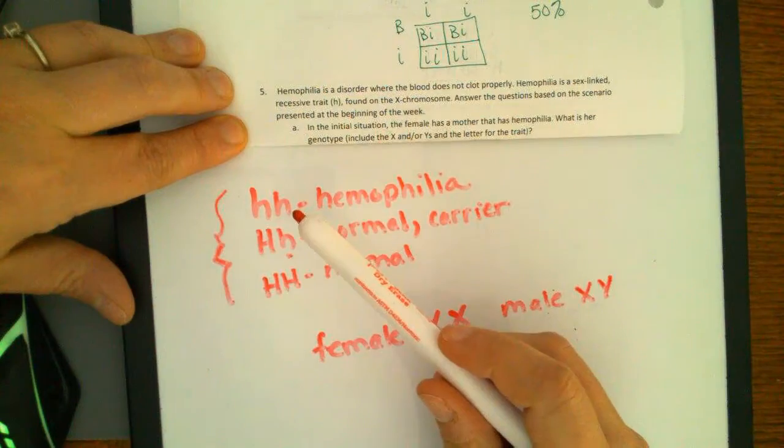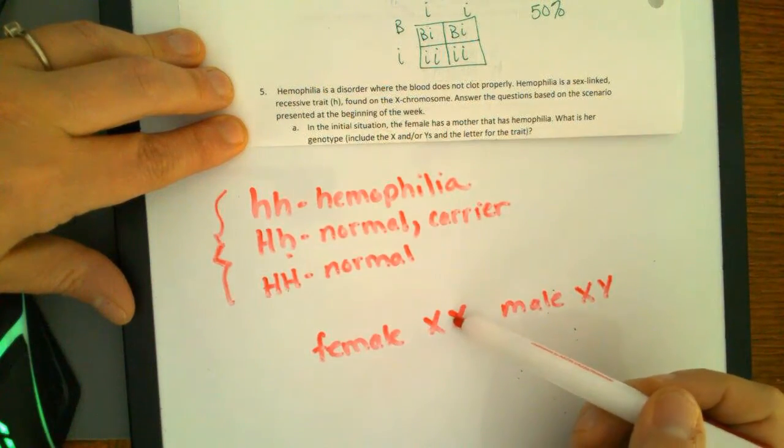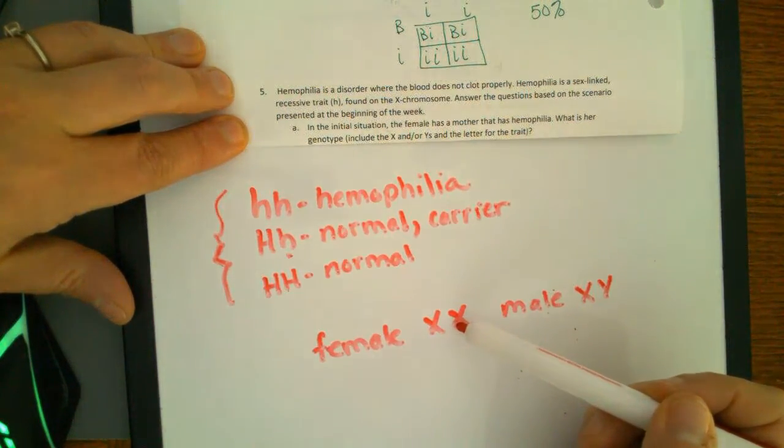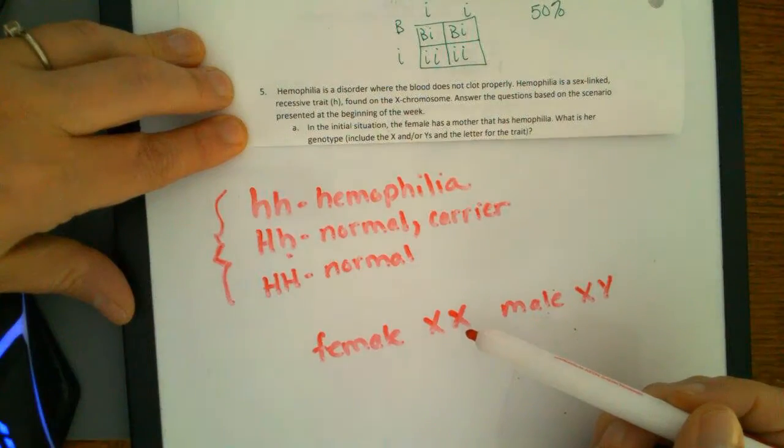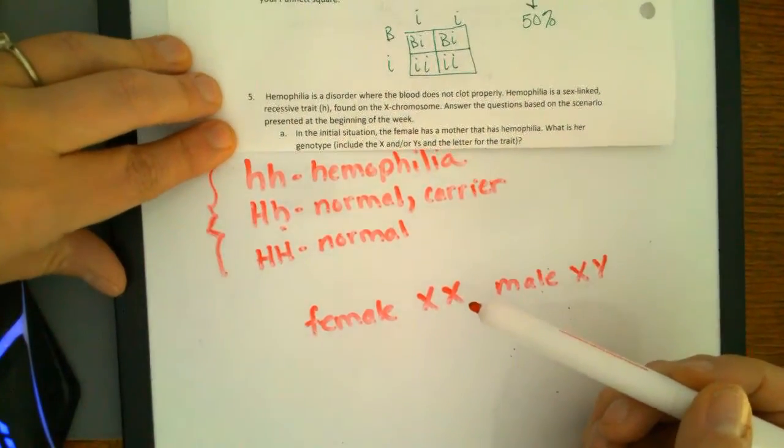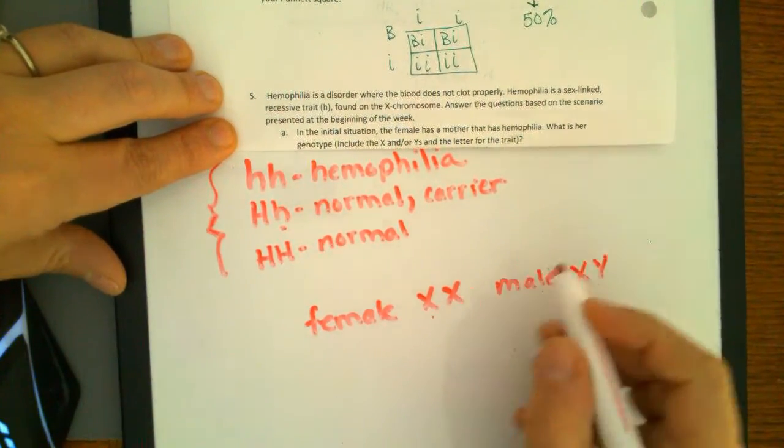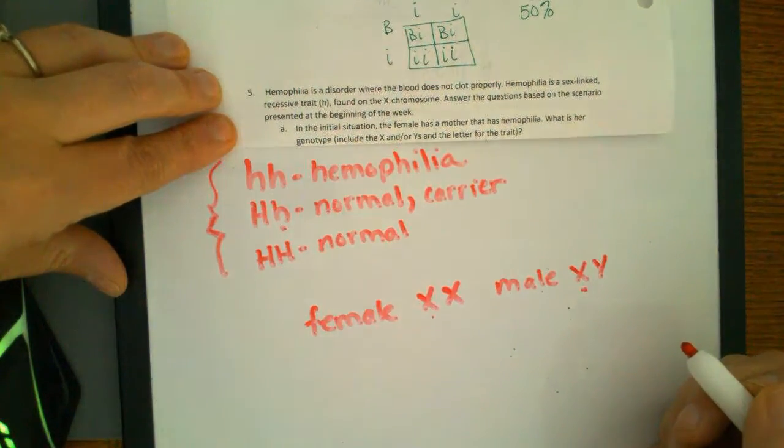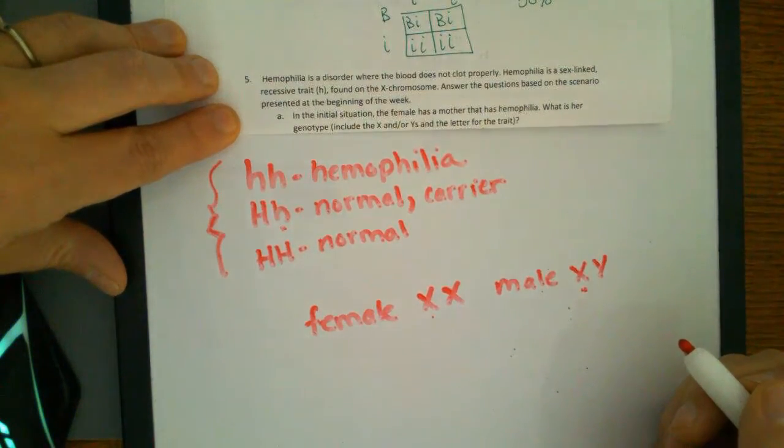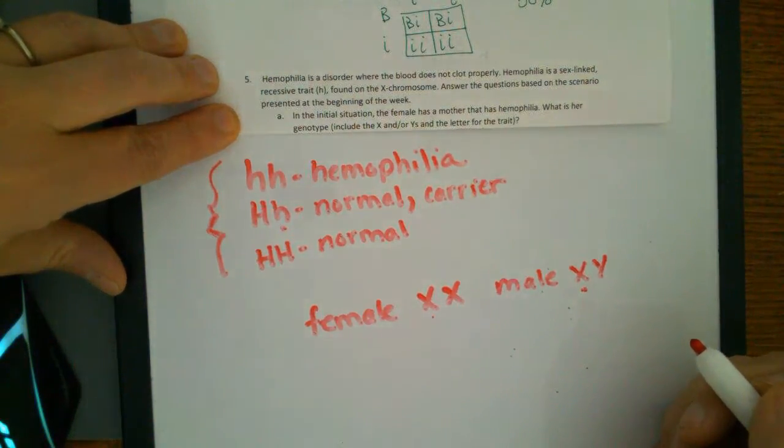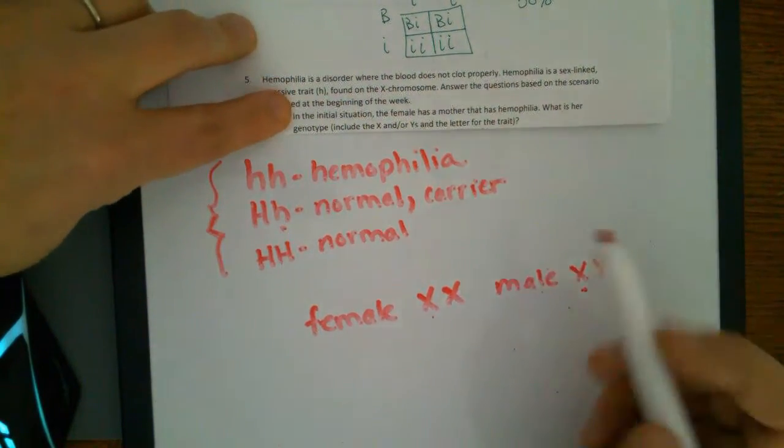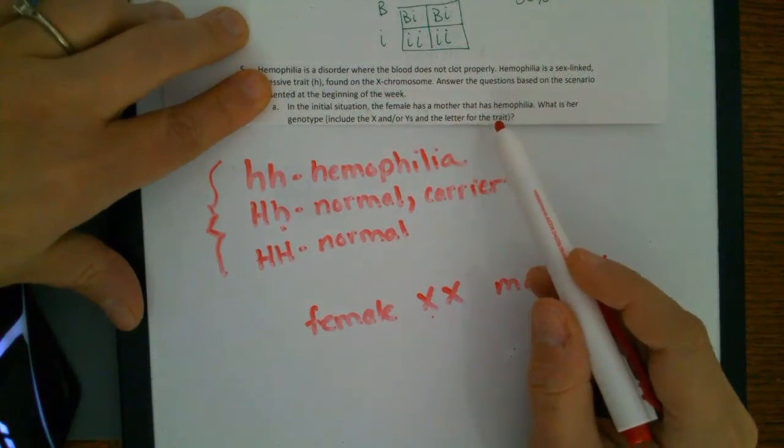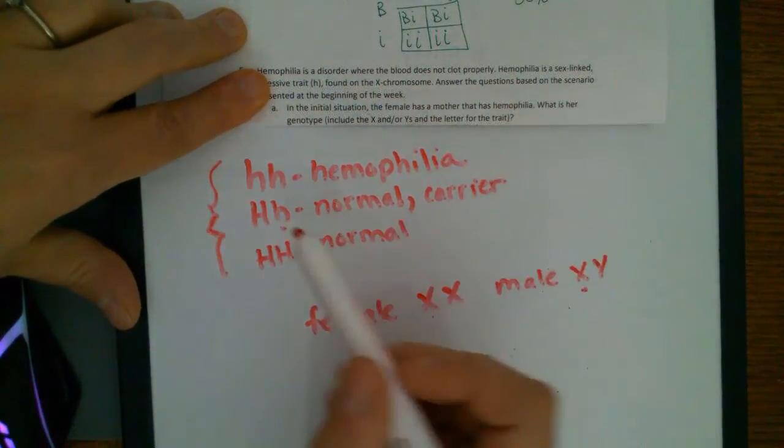So because this gene is a sex-linked gene, it means that the gene is actually carried, in this case, by the X chromosomes. And so we have to take into account this because it's going to affect males or females differently because it is found on a sex-linked chromosome. So in the first question, it says the female has a mother that has hemophilia.